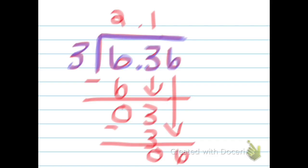I know that 2 times 3 is 6, so I'm going to put my 2 on the top. 2 times 3 is 6, and I'm going to subtract 6 minus 6, which is 0. So the answer for the second problem is 2 and 12 hundredths.